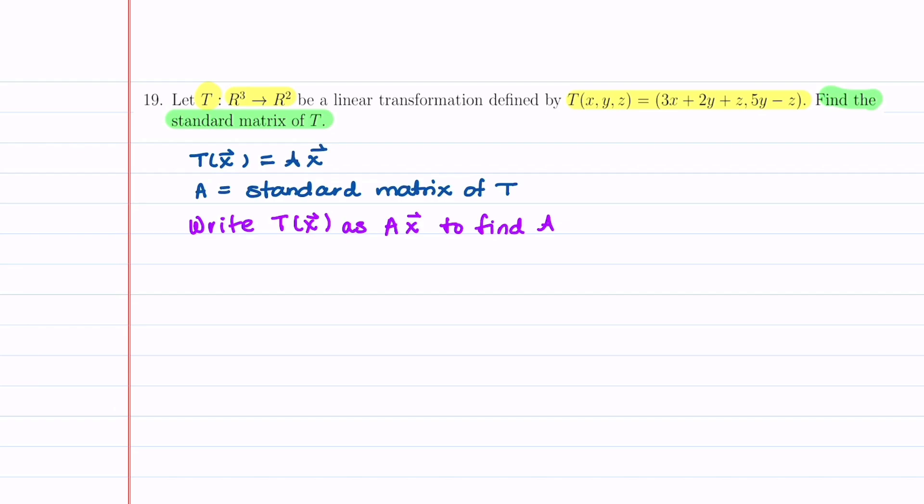I think students often struggle with this problem because they have a hard time remembering what the standard matrix of T is. So let's walk through this. If T of X is a linear transformation, it's defined as T of X is equal to A times X, and that A is our standard matrix of T.